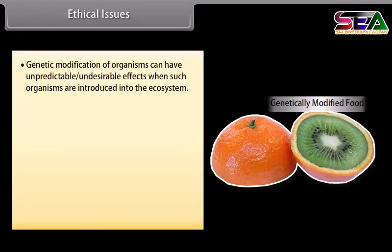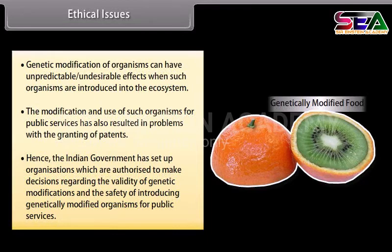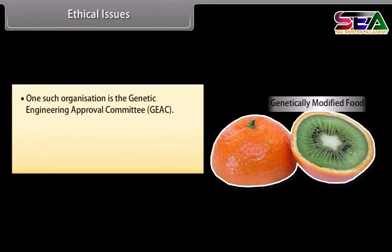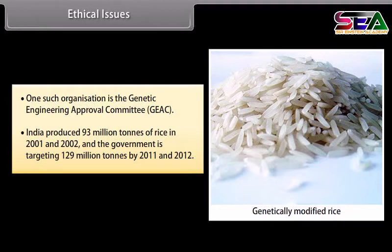Ethical issues: genetic modification of organisms can have unpredictable, undesirable effects when such organisms are introduced into the ecosystem. The modification and use of such organisms for public services has also resulted in problems with the granting of patents. The Indian government has set up organizations authorized to make decisions regarding the validity of genetic modifications and the safety of introducing GMOs for public services. One such organization is the Genetic Engineering Approval Committee, GEAC.